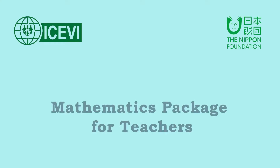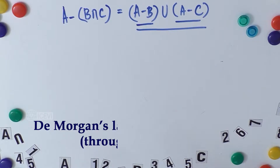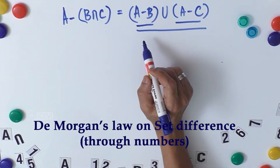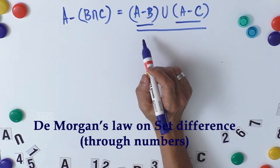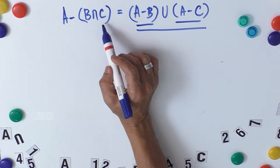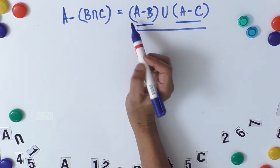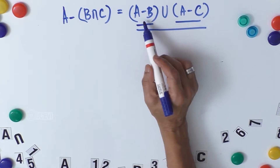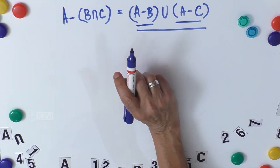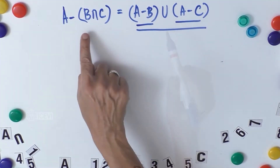The ICBI Nippon Foundation Mathematics Package for Teachers presents: De Morgan's Law on Set Difference. We will prove that A minus (B intersection C) equals (A minus B) union (A minus C).